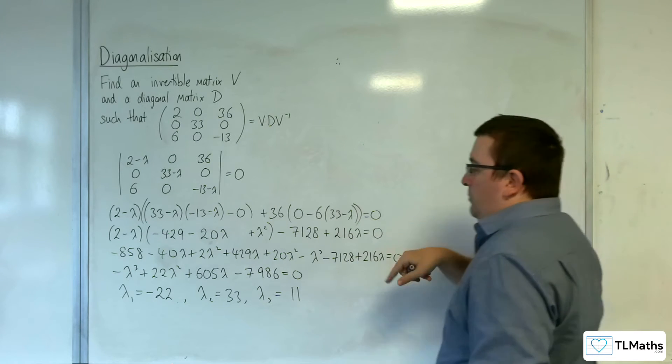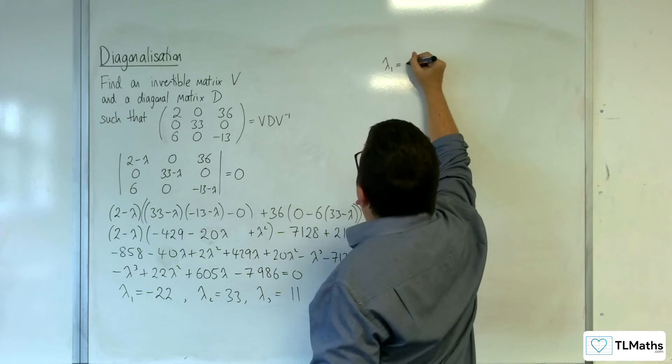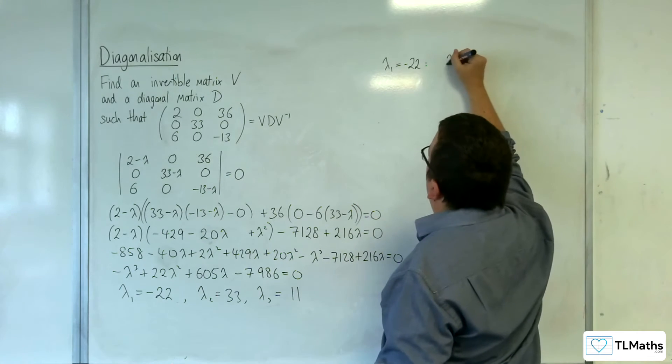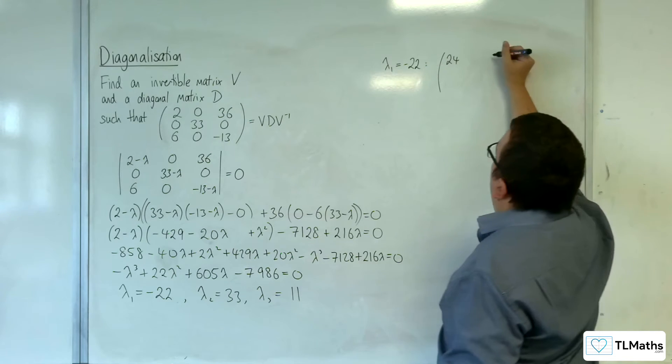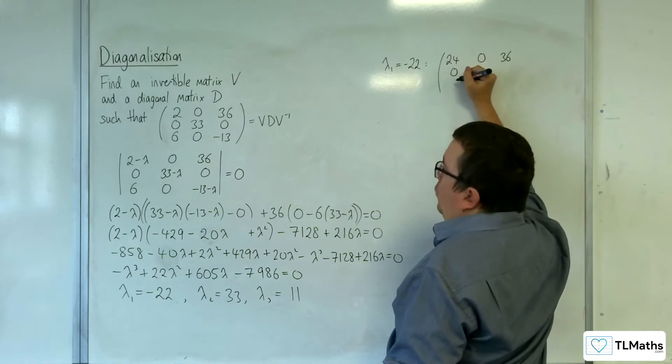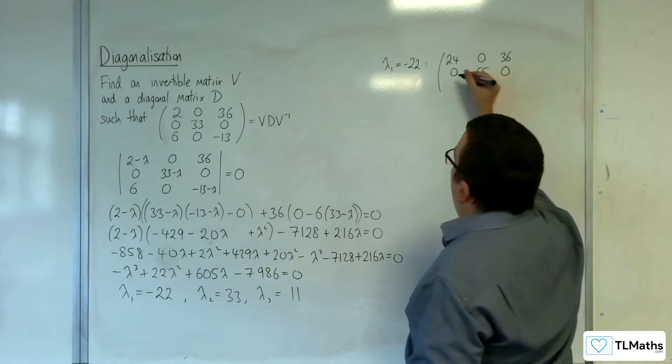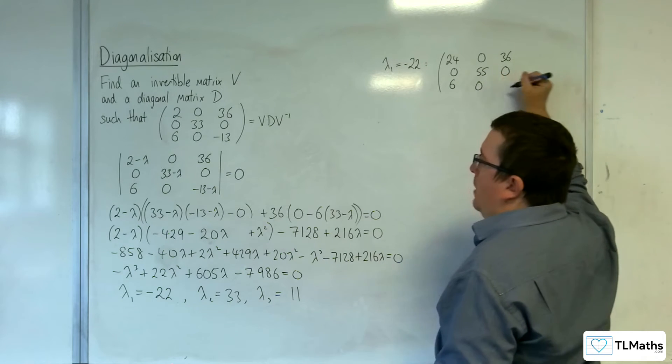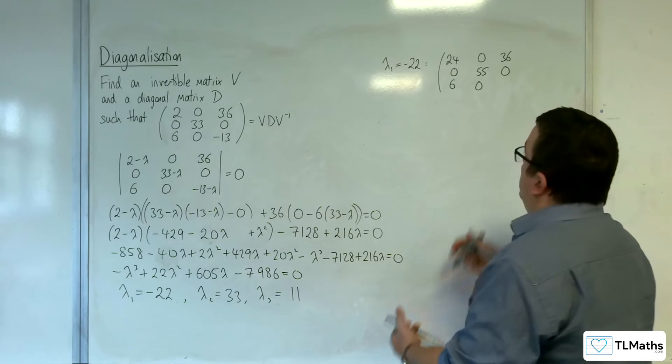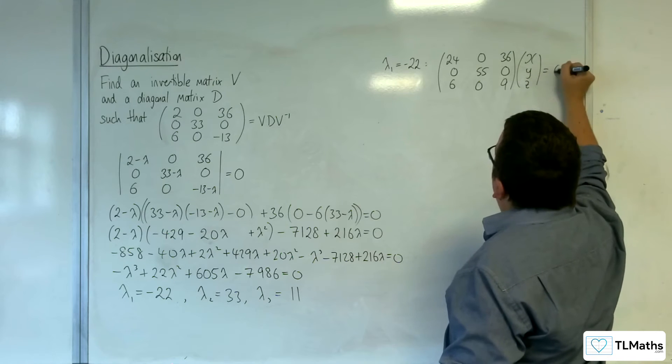Now we need to substitute them in, get those corresponding eigenvectors. So, lambda 1 is minus 22, so 2 take away minus 22 gets us to 24. Then we've got 0, 36, 0, 33 take away minus 22 gets us to 55, 0, 6, 0, minus 13 plus 22, 9. Then x, y, z equals the 0 vector.